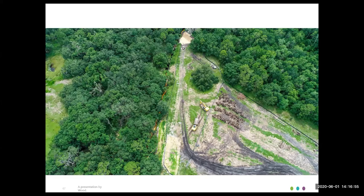This aerial image was taken by drone last spring, right before construction was starting. You can see the Mayaka River ditch going straight up the middle of the image, just to the right of those trees. It looks like a straight brown line — it's a black water system, so the water is tannic.